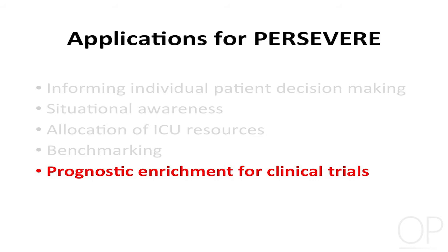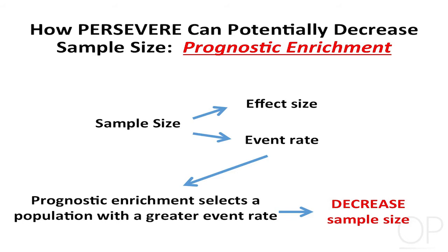The concept of prognostic enrichment is relatively simple. When designing a clinical trial, key factors for sample size calculation are your effect size and your event rate. Prognostic enrichment selects a population with a greater event rate. By doing so, you can potentially decrease the sample size of your trial.